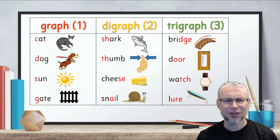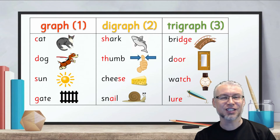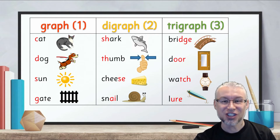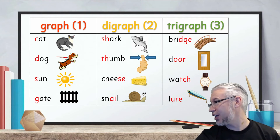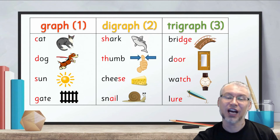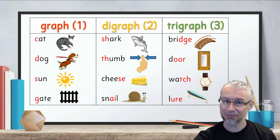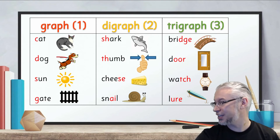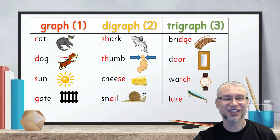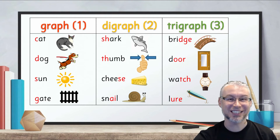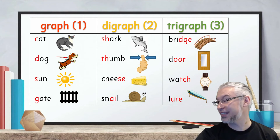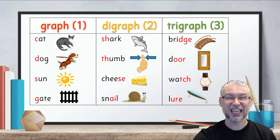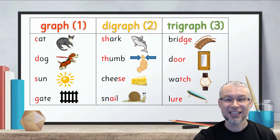Digraph column: 'sh' as in shark — S-H. 'Th' as in thumb — T-H. 'Z' as in cheese — S-E. 'A' as in snail — A-I. These are all two-letter graphemes, which makes them digraphs.